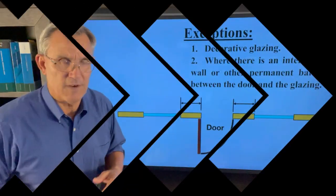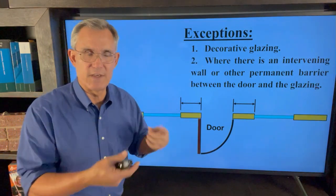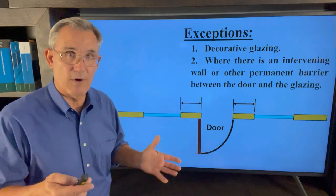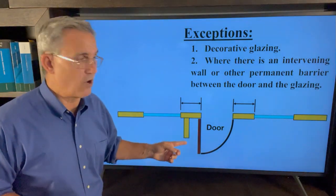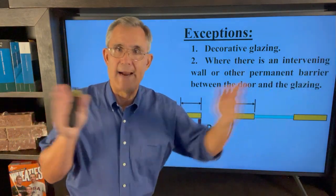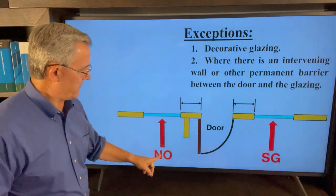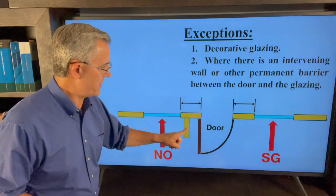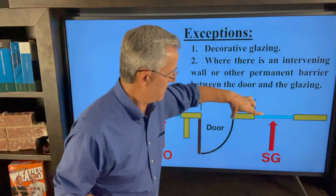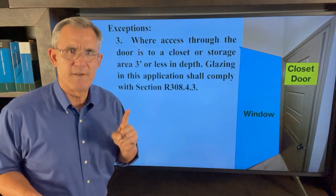There are always exceptions. There's decorative glazing, which I covered in the first video. Then there's a new one: where there is an intervening wall or other permanent barrier between the door and the glazing. Here's a wall — the door swings in and would hit this wall. It doesn't say how long the wall has to be, just that it's a wall or permanent barrier. In that case, obviously the glass beyond the barrier does not have to be safety glass, because the door can't hit it and shove you through. However, on the same plane within 24 inches on the other side, that one would still be safety glass.